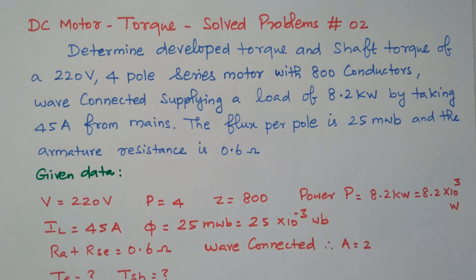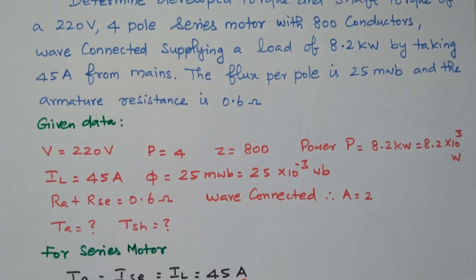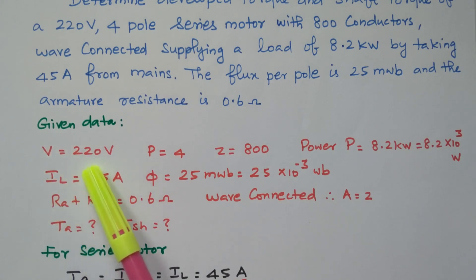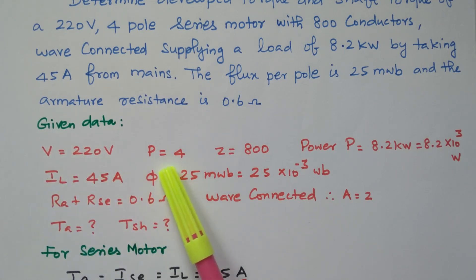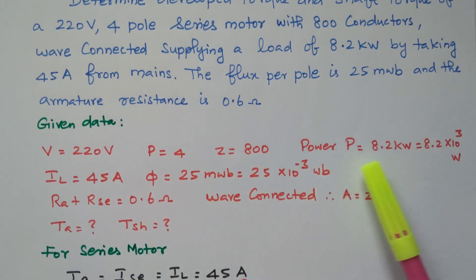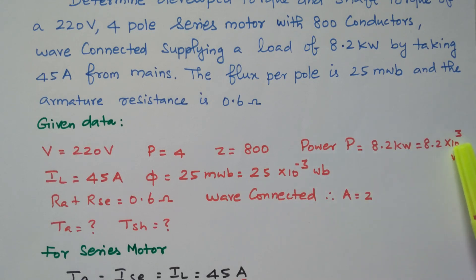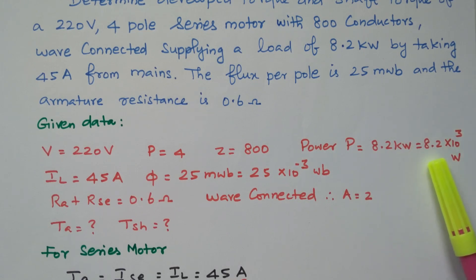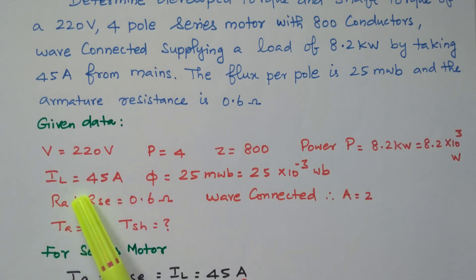Now we will analyze the given data. The terminal voltage is 220 V, number of poles equal to 4, number of conductors is 800. The output power is 8.2 kilowatt, which means 8.2 into 10 to the power 3 watts. The load current is given as 45 ampere.